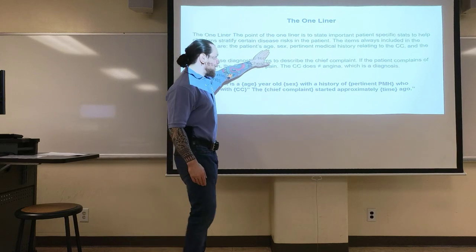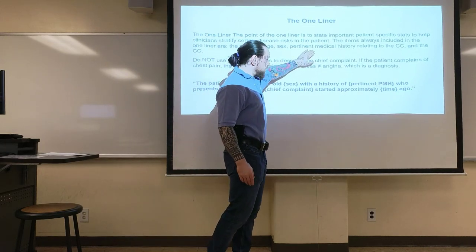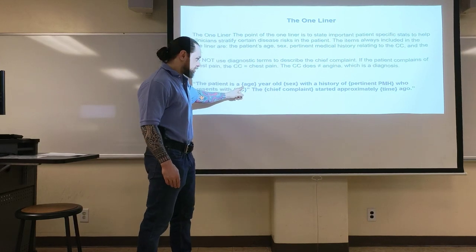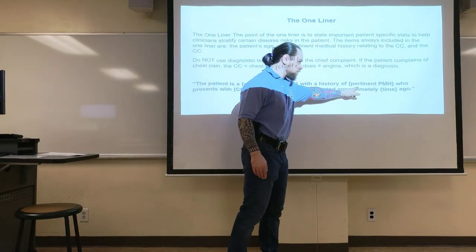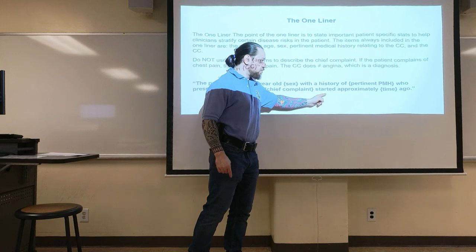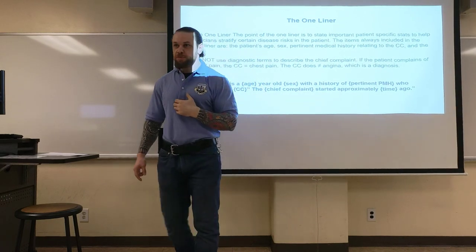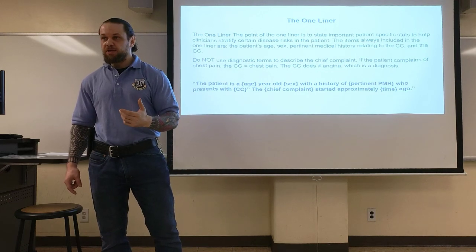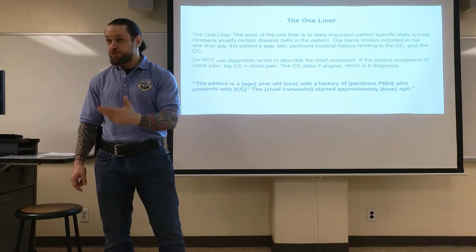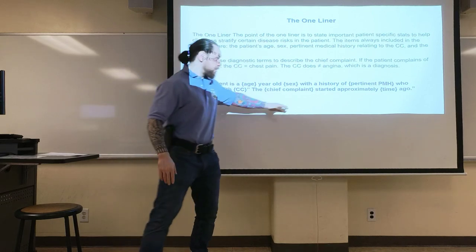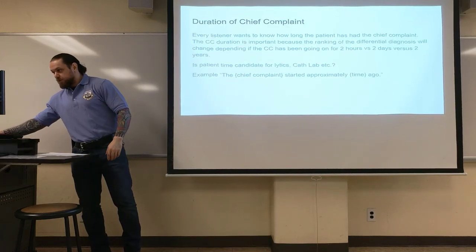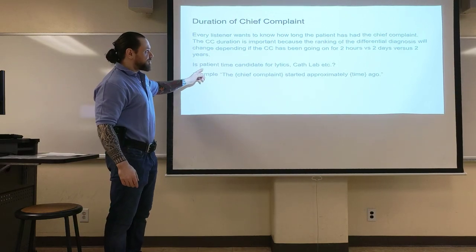We always include the patient's age, sex, and pertinent history related to the chief complaint. The one-liner format is: 'The patient is [age]-year-old [sex], with [pertinent history], who presents with [chief complaint in patient's own words], approximately [duration].' For example: 'Presents with chest pain for one hour,' or 'chest pain which began at 8 in the morning and has been there for 30 minutes.' It's very important to obtain and record the time of onset.